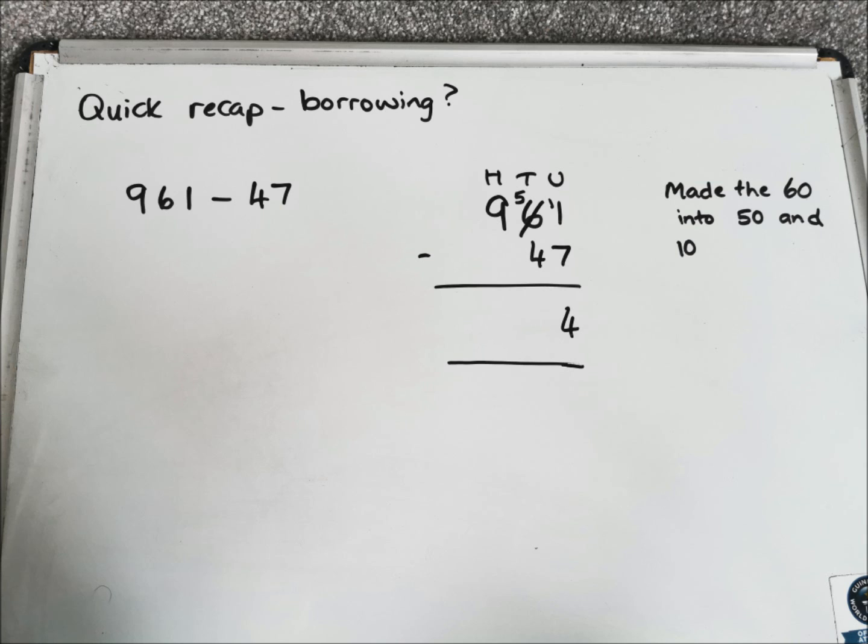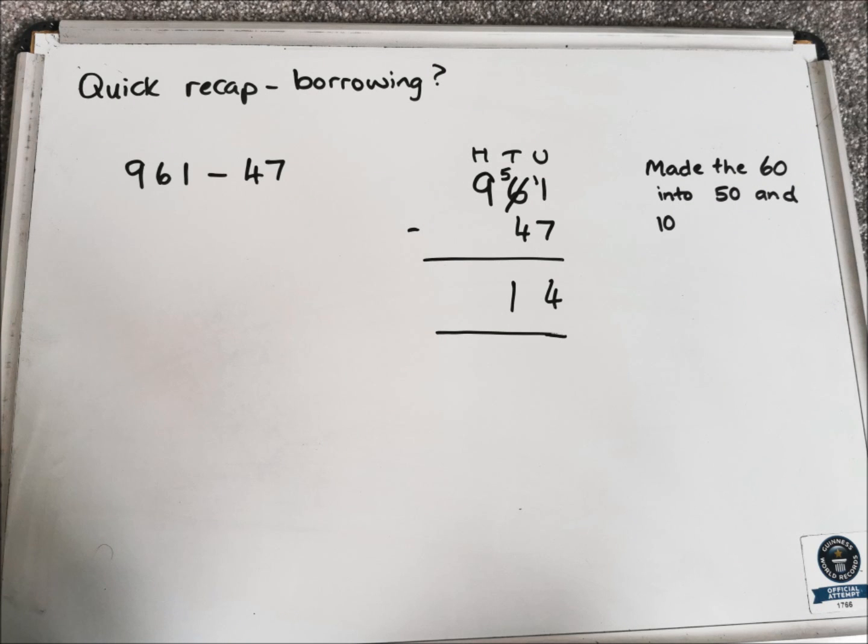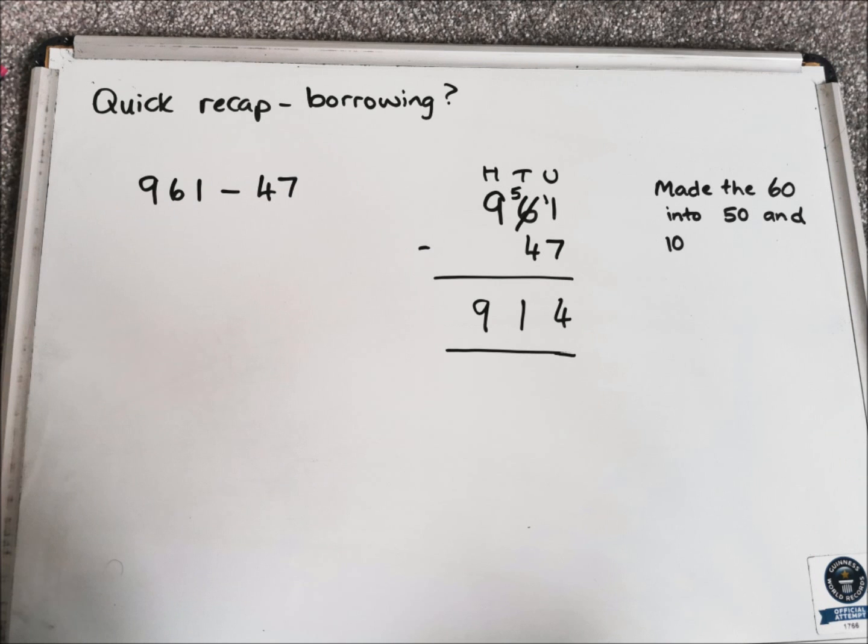Then moving on to the tens, we've now got 5 take away 4, which is 1. And then in the hundreds, it's just 9 take away nothing. So the answer in there is 914.